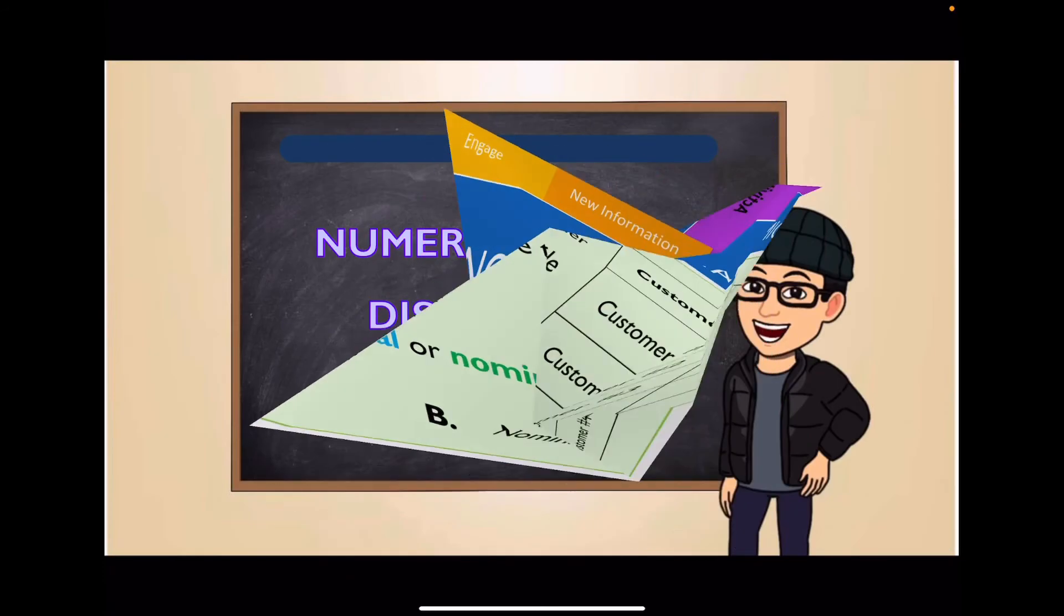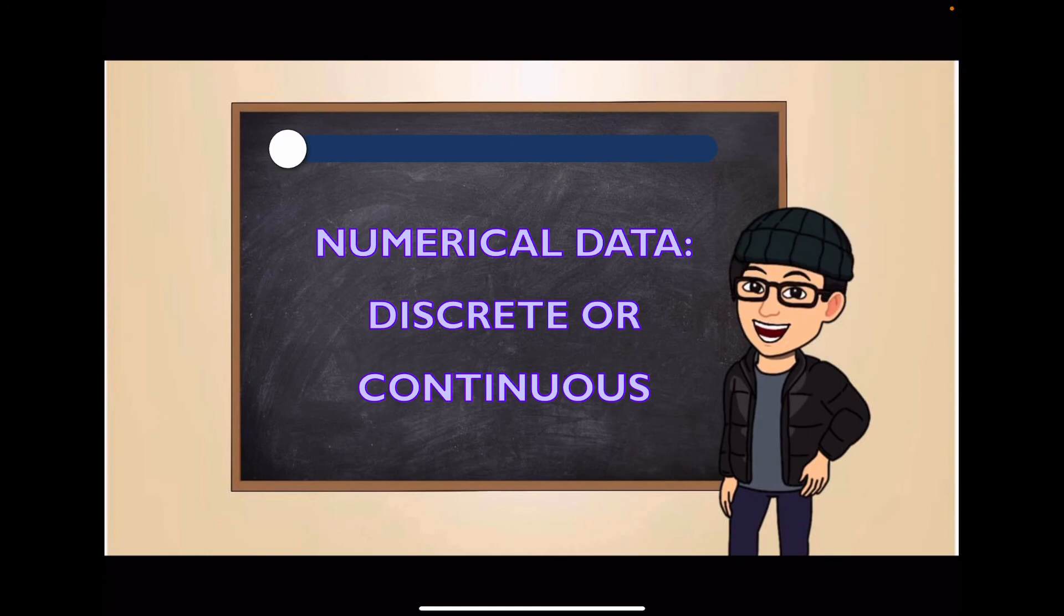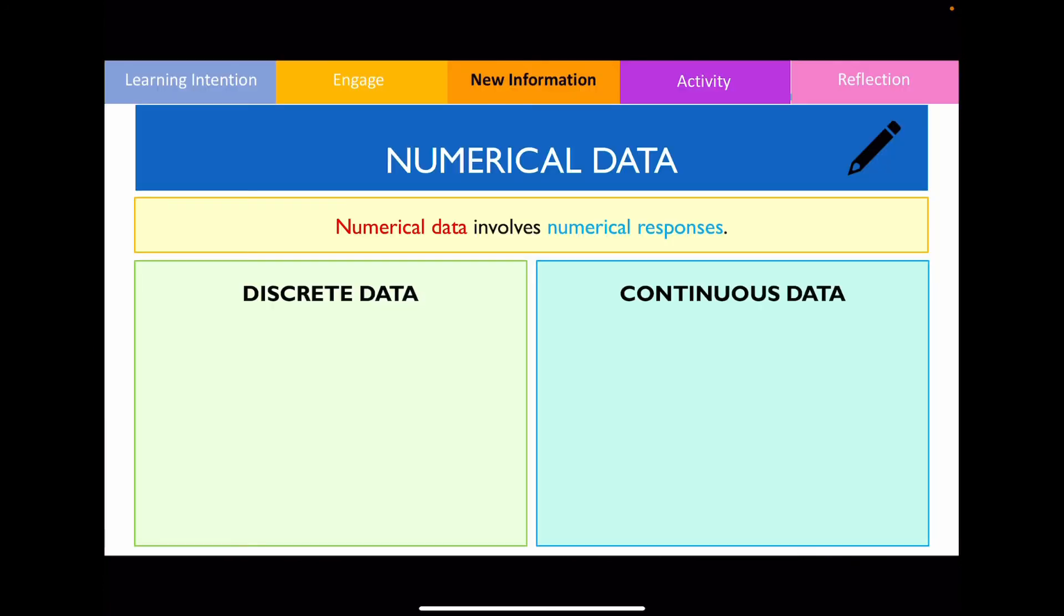Let's now look at the subtypes of numerical data. So numerical data can be further classified as discrete or continuous data. For discrete data, we are concerned with data that can only take on a certain or a specific value. I would also like to add that for discrete data, you're generally going to get whole numbers in response, but you're not always going to be limited to them.